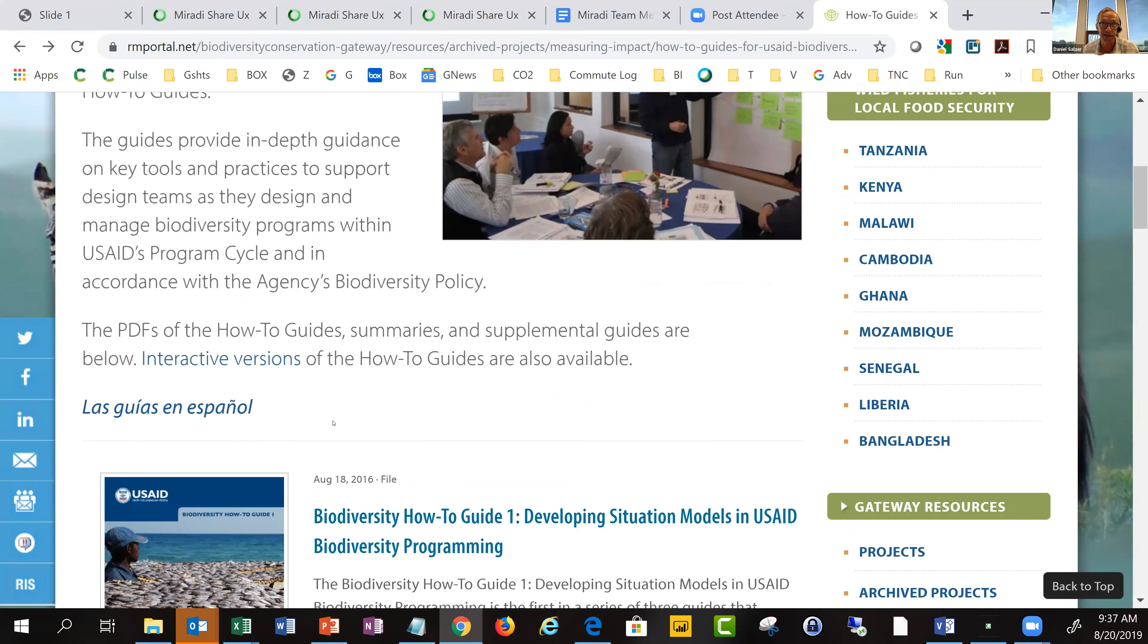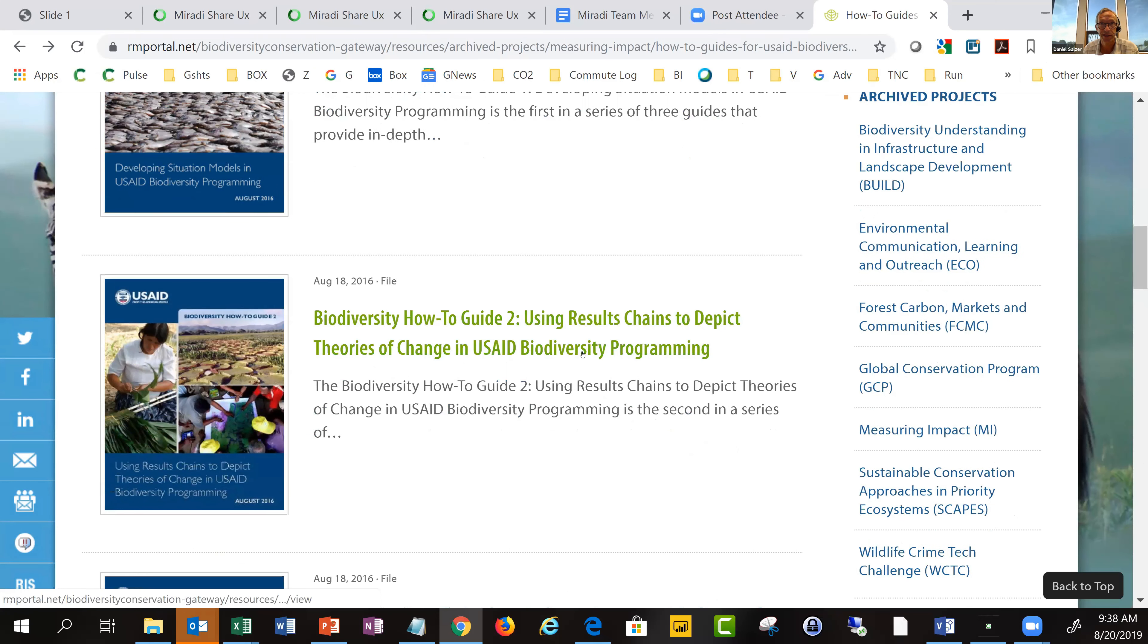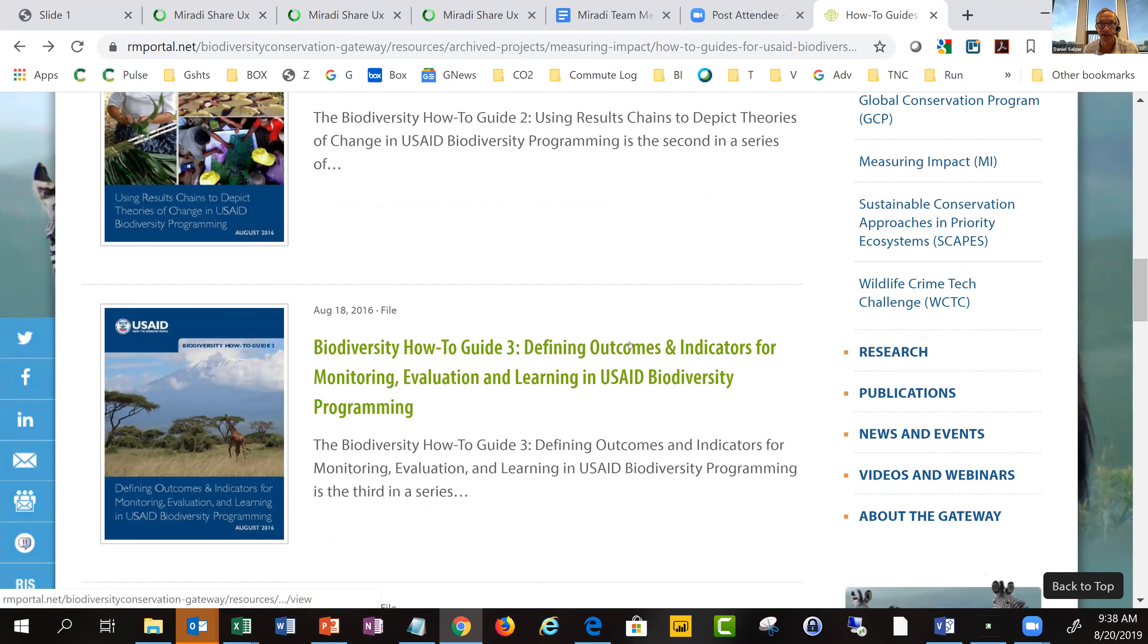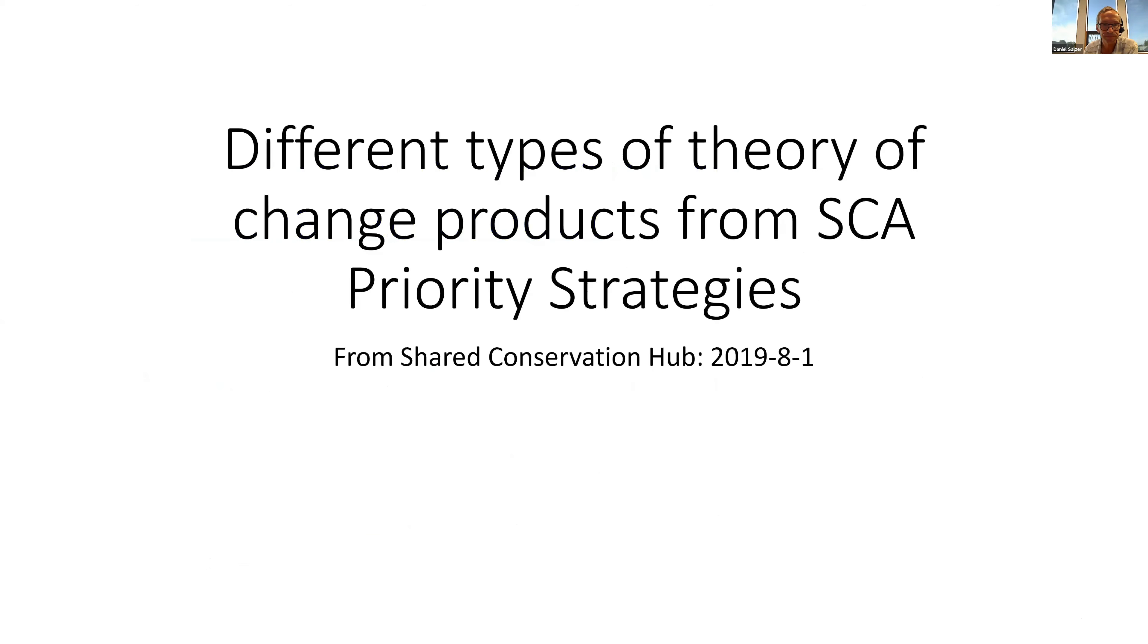There's a link for these how-to guides. I really encourage you to check these out. They're fairly new and in a couple of different languages. There's one on situation models, another on using results chains, theories of change, and defining outcomes and indicators. I'm really impressed with the level of effort and quality. Those links are in there. There's a peer-reviewed publication that Foundations of Success put together on results chains. And there's theoryofchange.org with a lot of additional resources.